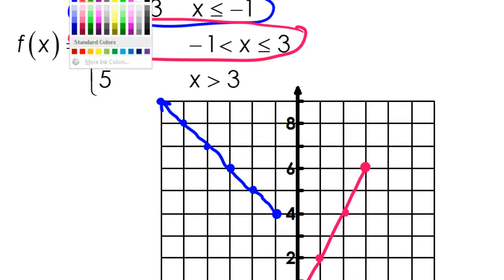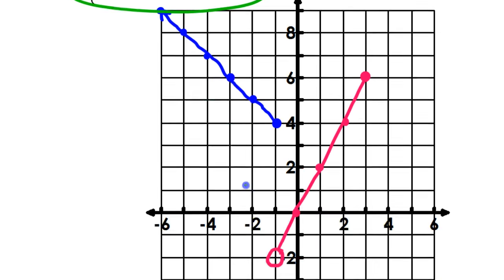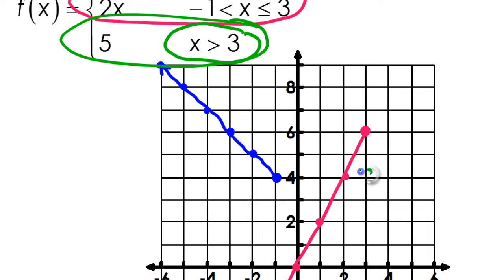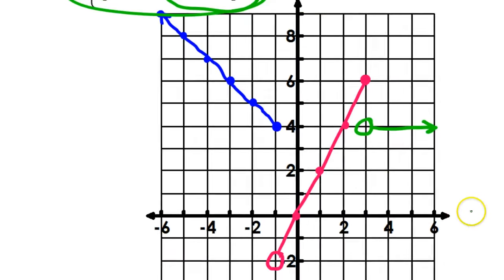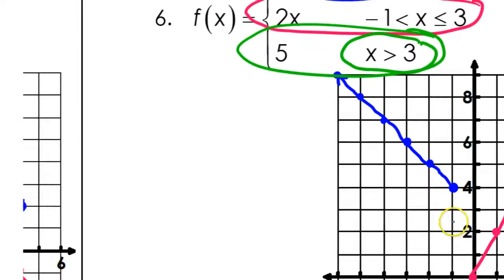That just leaves the constant, which I'll do in green. I'm not going to use my calculator for this — it's just a horizontal line at 5. But I'm not going to draw the whole thing; I'm just going to draw the part where the x values are greater than 3. Here's where the x value is 3 — I'll put an open circle because it's greater than, not equal to. And greater than 3 is to the right. This is what your answer to number 6 should look like. Any questions?